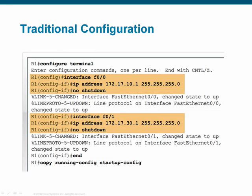When implementing traditional interVLAN routing with multiple physical interfaces, the interface configuration is no different than applying a basic interface configuration. Each interface gets its own IP address on a different subnet. Separate cables are then used to connect each physical interface to its respective VLAN switch port.